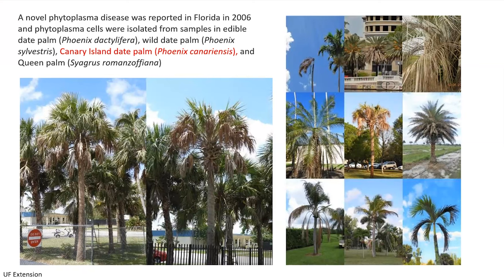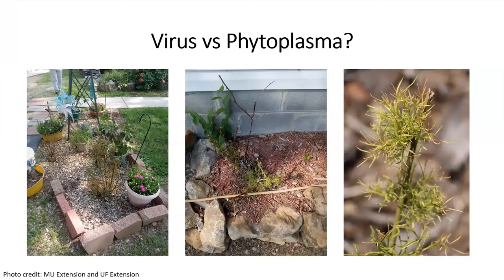Of course, we don't have palm trees in Missouri, but we do have phytoplasma diseases. We recently received a photo from a colleague showing a rose plant that we suspect also has a phytoplasma disease. You can tell there is hormonal disorder — producing a kind of overgrowth symptom. There's still some reddish coloration, but overall it looks a little different from a virus infection.